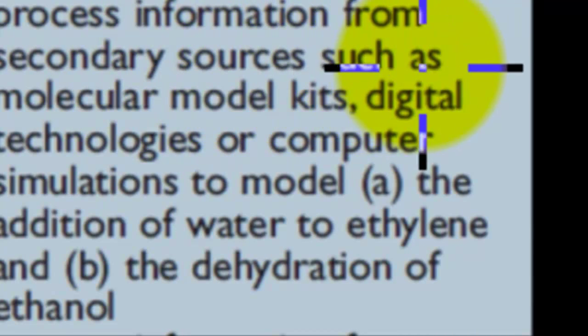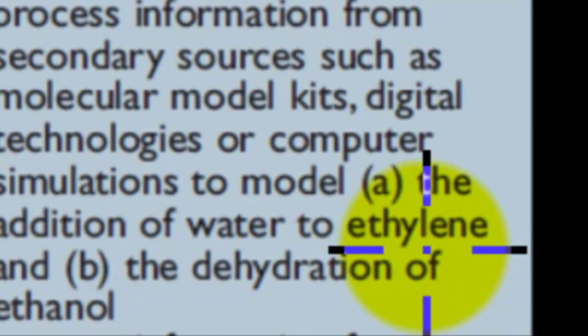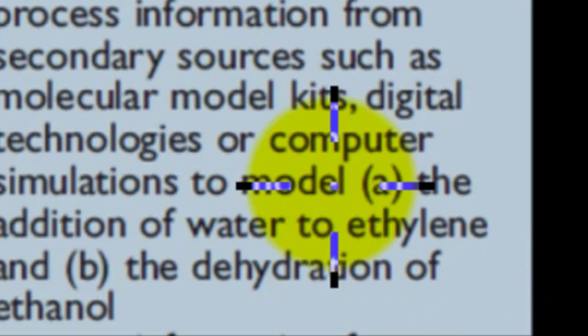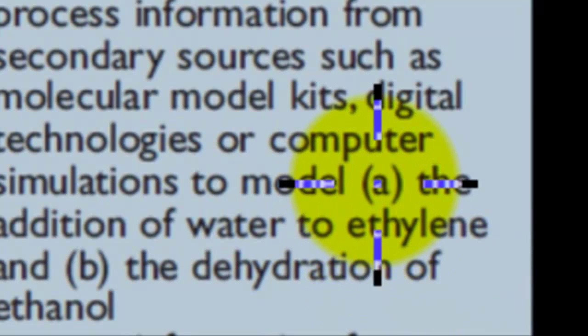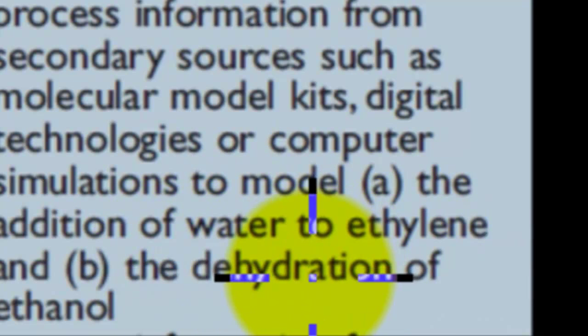The actual dot point says: process information from secondary sources such as molecular model kits, digital technologies, or computer simulations to model — A, the addition of water to ethylene, and B, the dehydration of ethanol. In this video we are going to cover the computer simulations, showing how A, the addition of water to ethylene produces ethanol, and how B, the dehydration of ethanol produces ethylene.